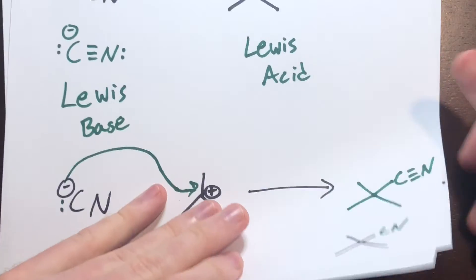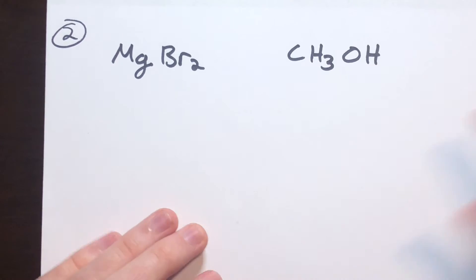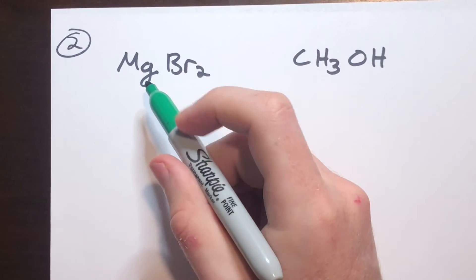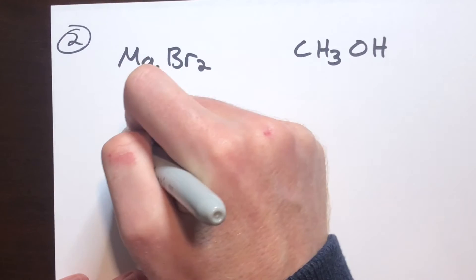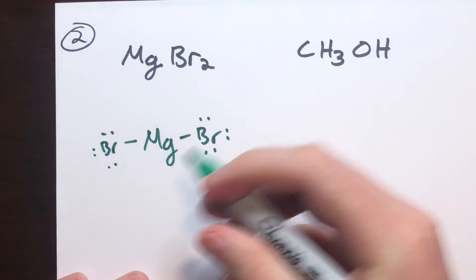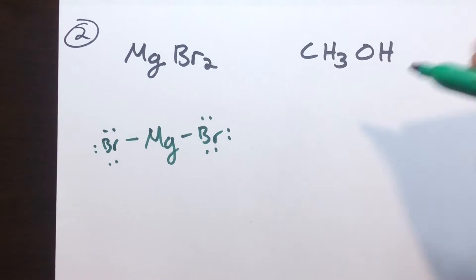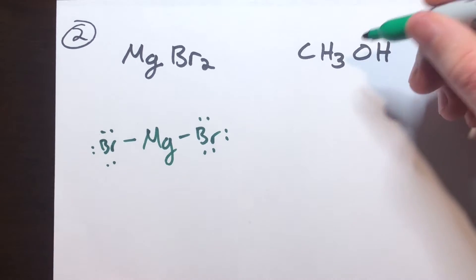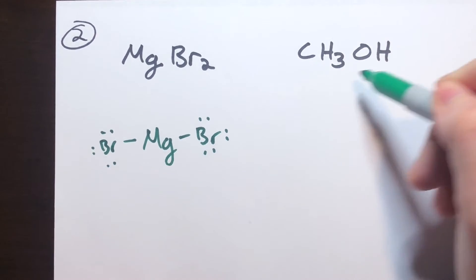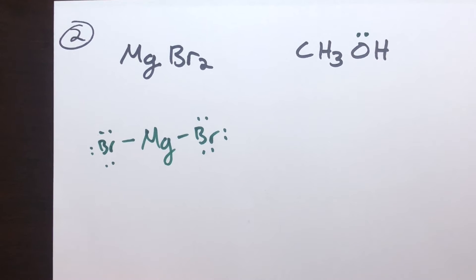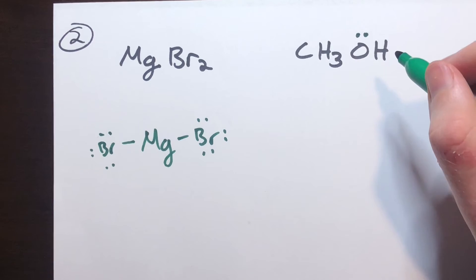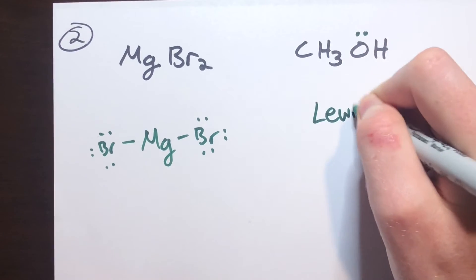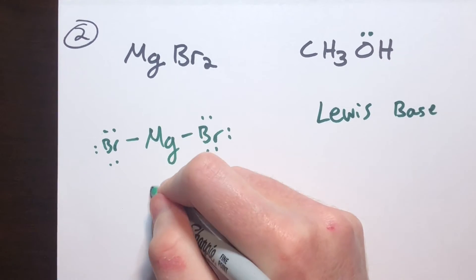Moving to another example: we have magnesium bromide and CH₃OH. With magnesium bromide, it may be unclear at first — the bromines have lone pairs making them potential Lewis bases, and the magnesium could take another bond making it a potential Lewis acid. So you have to look at the other molecule. Methanol (CH₃OH) has lone pairs on the oxygen and that's it; the carbon can't have a fifth bond and the oxygen can't easily take another bond either. So methanol is definitely the Lewis base, which makes magnesium bromide the Lewis acid.